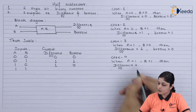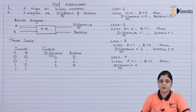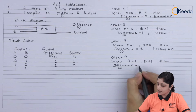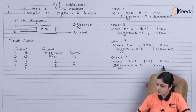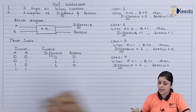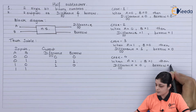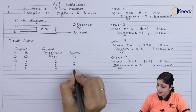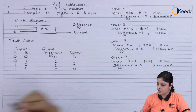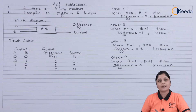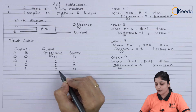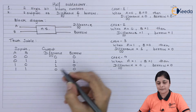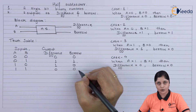For Case 3 the borrow is 0, so the output is 1 and 0. Case 4: when A equals 1 and B equals 1, difference equals 1 minus 1, which is 0, and borrow is also 0. This is simple subtraction. So we have got the outputs for difference and borrow.